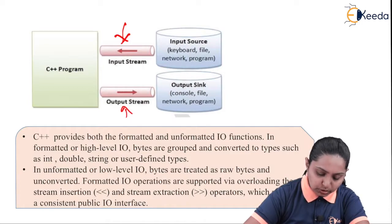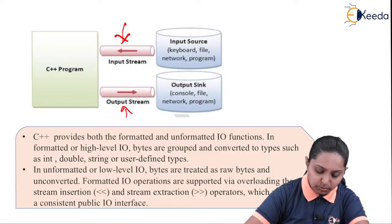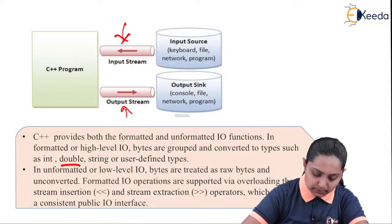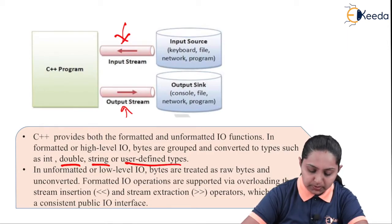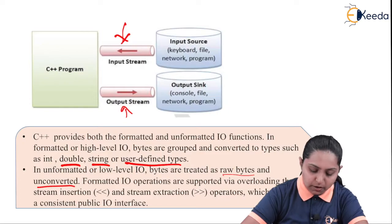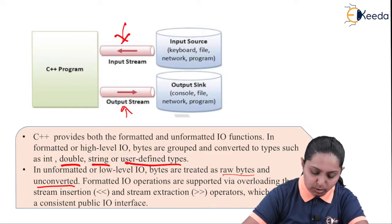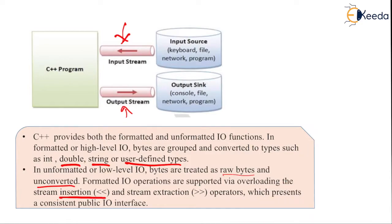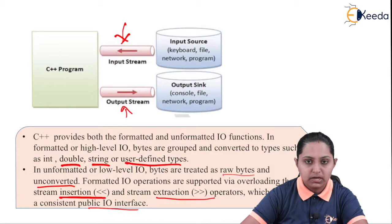C++ provides both formatted and unformatted IO functions. In formatted or higher-level IO, bytes are grouped and converted to types such as int, double, string, or user-defined types. In unformatted or low-level IO, the bytes are treated as raw bytes and unconverted. Formatted IO operations are supported via overloading the stream insertion and stream extraction operators present in the public IO interface.